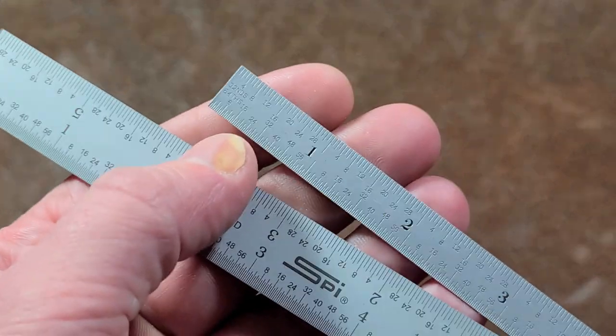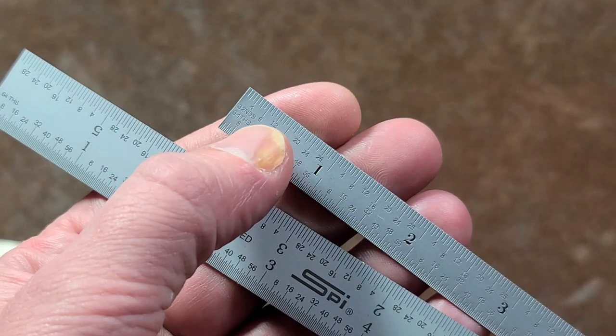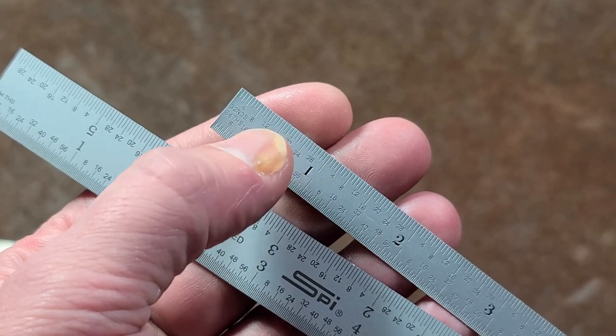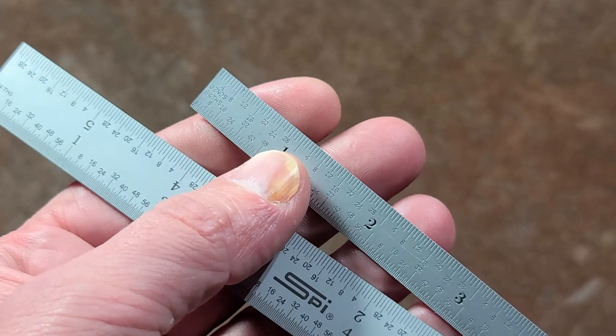And I do like the way that they offset it. There we go. Depending on what measurements you're taking, it's easier to see whether you're at a 16th or a 32nd, just because they're not all in line, but they're offset, which is real wise for them to do.